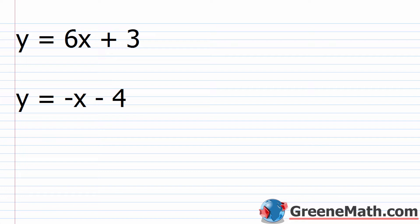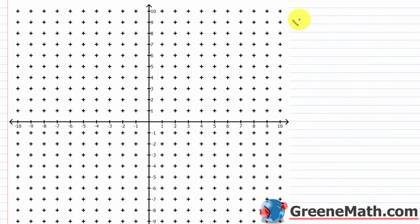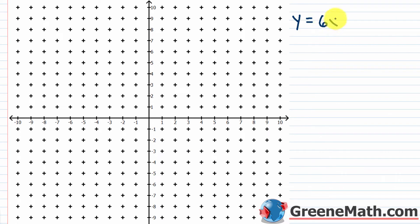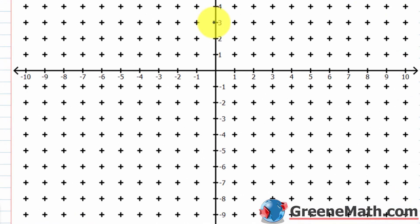We start out by looking at one linear equation in two variables: y equals 6x plus 3. It's a linear equation in two variables and I can graph this on a coordinate plane. In slope-intercept form, my y-intercept occurs at (0, 3).